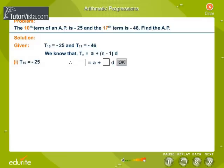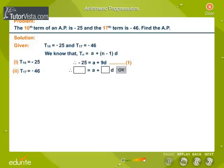Find the equations for T10 and T17 by substituting the values. Use the OK button to check your answer. Hence, we obtain the two equations: minus 25 is equal to a plus 9d, and minus 46 is equal to a plus 16d.